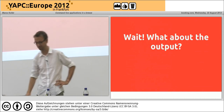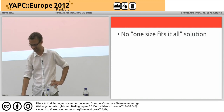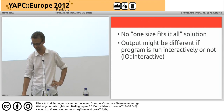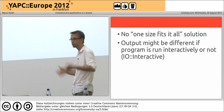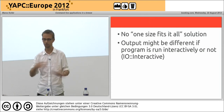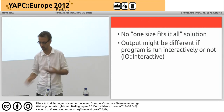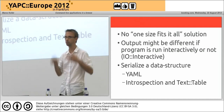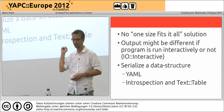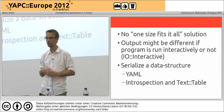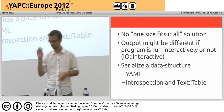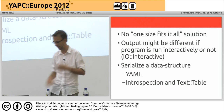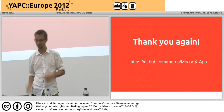One more thing about output — I didn't mention it because there is no one-size-fits-all solution. Your output might be different if your program is run interactively or not. What I recommend: if you don't want to put much effort in it, just dump it as YAML and you're done. Or what I've done a couple of times: add some introspection and print it out as a big text table. And then you're basically done. Thank you again.